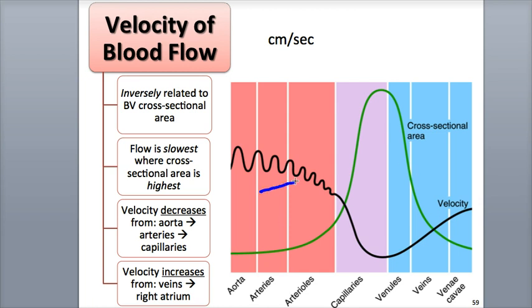The black line represents the velocity of blood flow, and the green line represents the total cross-sectional area of the vessels. In vessels having the largest total cross-sectional area, like the capillary beds, velocity of blood is the slowest.